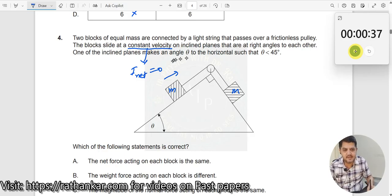One of the inclined planes makes an angle theta to the horizontal such that theta is less than 45. Theta could be 60 here, theta could be 30 here. One of them is less than 45, so I think this is fine. Maybe this could be 30, that could be 60, appears to be larger. So this could be 60, this could be 30.